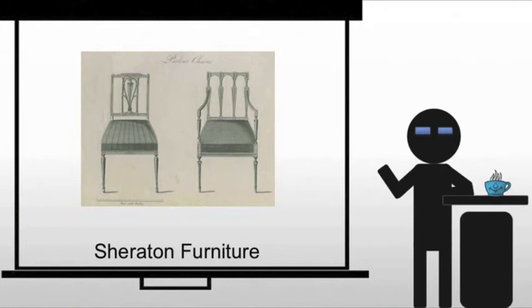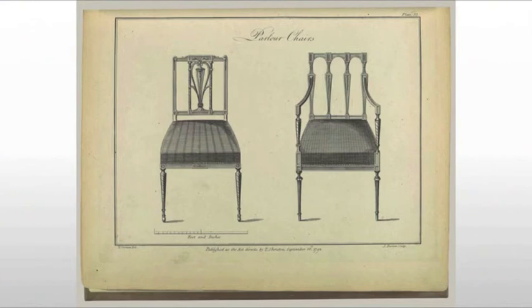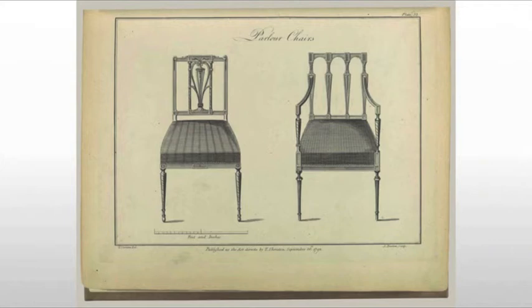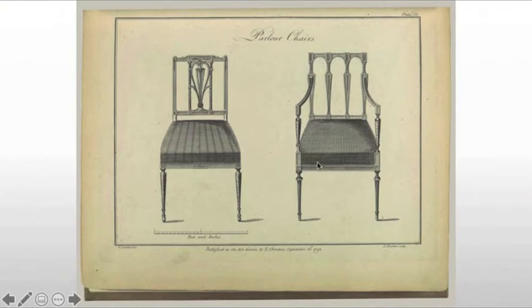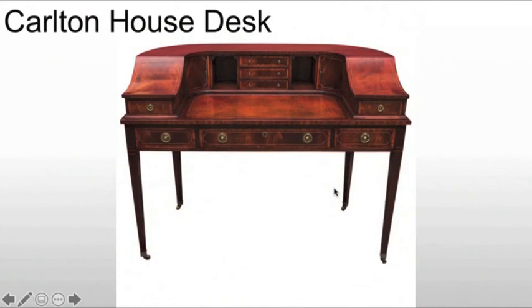We also have Sheraton furniture. Thomas Sheraton will write a book called The Cabinet Maker and Upholsterer's Drawing Book, and he's going to be very influential with this text where he's designing things but isn't necessarily making them — this is another element of specialization and professionalization in the world of interior design. With the chairs, chair backs tend to be rectilinear. Sometimes there are going to be porcelain plaques inset. We're going to see small-scale decorations, veneers, and inlays. He's going to use the same types of furniture legs as we saw from Hepplewhite, although the back legs continue upward to form the back of the support — the back leg comes up as one solid piece going back to that rear leg.